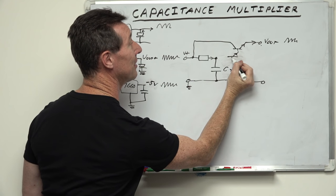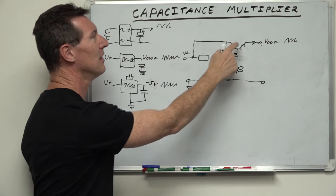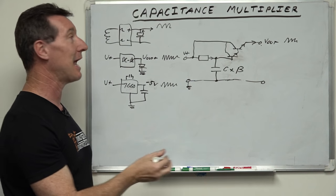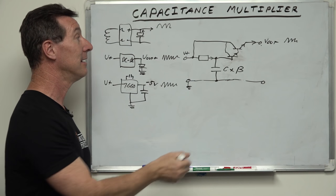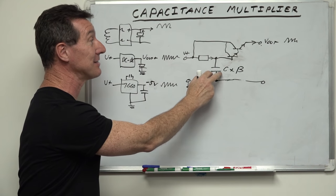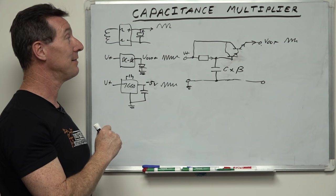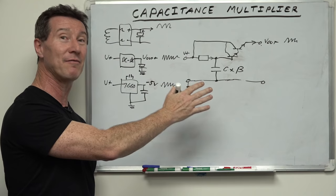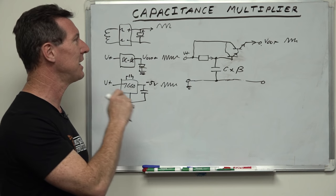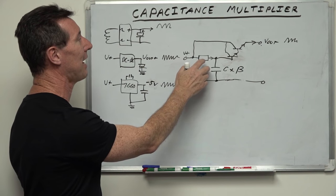You can use another classic building block - the Darlington pair - to increase the gain dramatically. You could use two separate transistors: a large high-current pass transistor and a smaller signal transistor driving its base. A Darlington pair has much higher gain, so your capacitance multiplication factor is even bigger. You can effectively achieve many farads of equivalent capacitance - a Darlington pair might have a gain of 1000 or so - and reduce ripple to almost negligible levels. But you might still want to avoid a BJT if you want an extremely small capacitor with a very large resistor value.